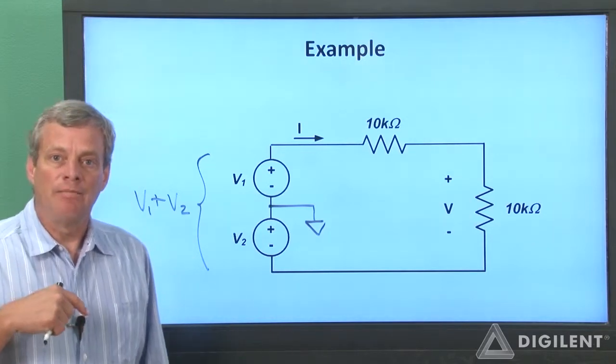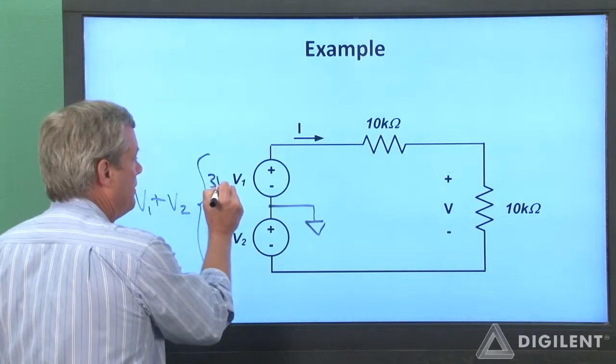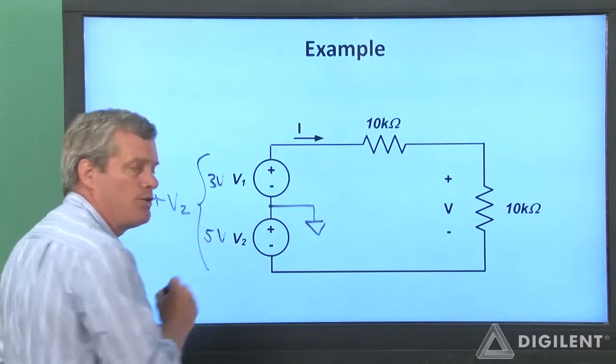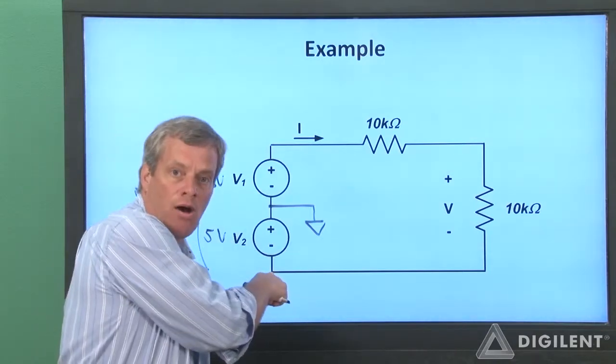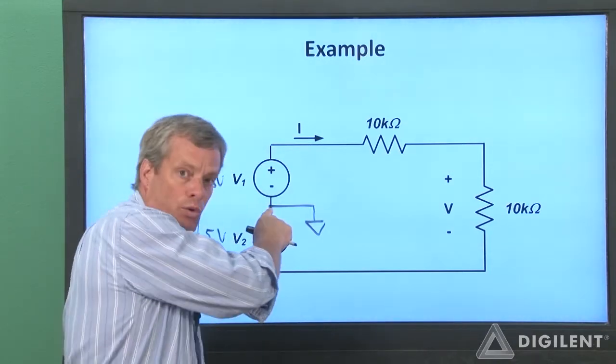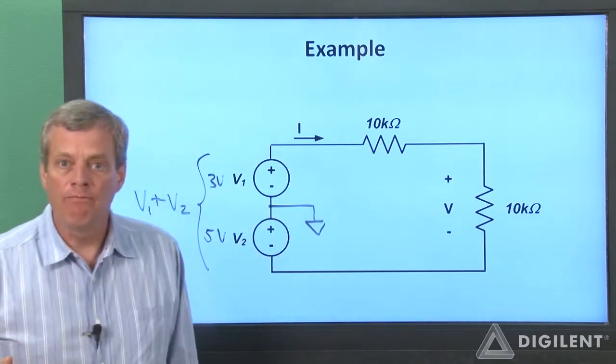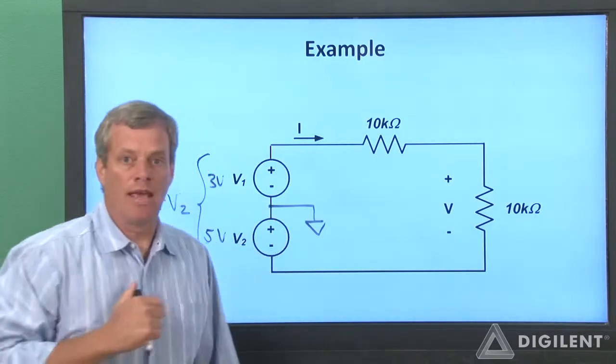Now let's arbitrarily claim that I'll use 3 volts for V1 and 5 volts for V2. This node now is 5 volts below ground. I need to apply negative 5 volts here if we use the analog discovery.